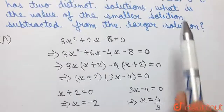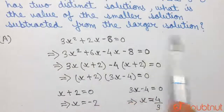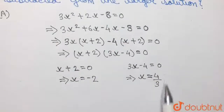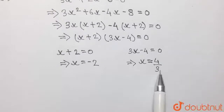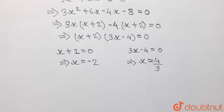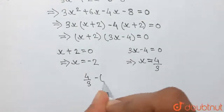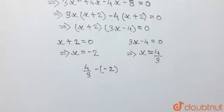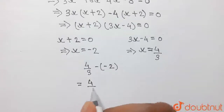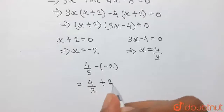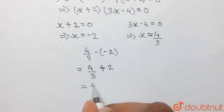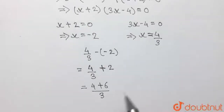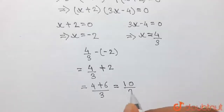As per the question we have to find the value of the smaller solution subtracted from the larger solution. We can observe that 4 by 3, being a positive number, is the larger solution, whereas minus 2, being negative, is the smaller solution. So we have to find the value of 4 by 3 minus minus 2. The two minuses become plus, so we have 4 by 3 plus 2, which gives us 4 plus 6 by 3.